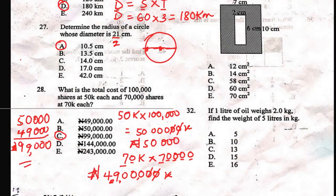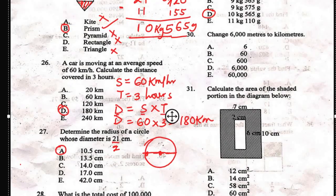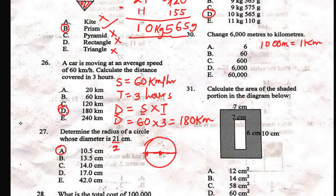Question 30 says: change 6,000 meters to kilometers. To solve this, know that 1,000 meters is equal to 1 kilometer. So to change 6,000 meters to kilometers, you simply divide 6,000 by 1,000. Since 1,000 is the unit of conversion, cancel the three zeros, and the correct answer will be A — 6 kilometers.